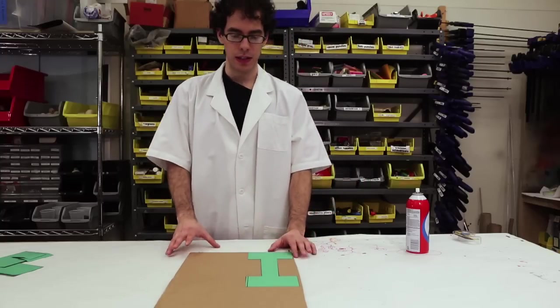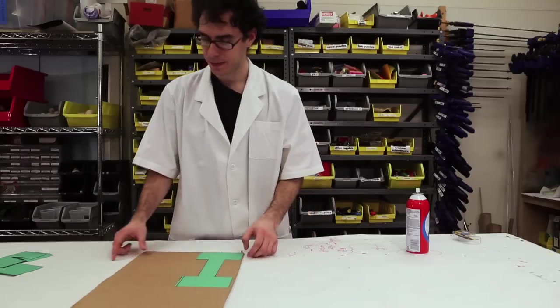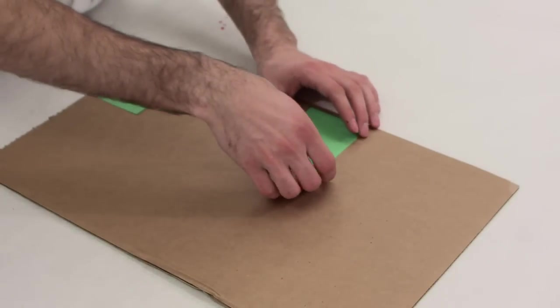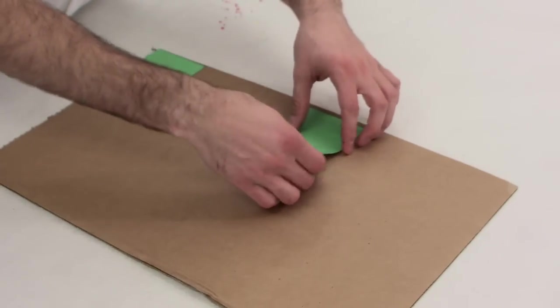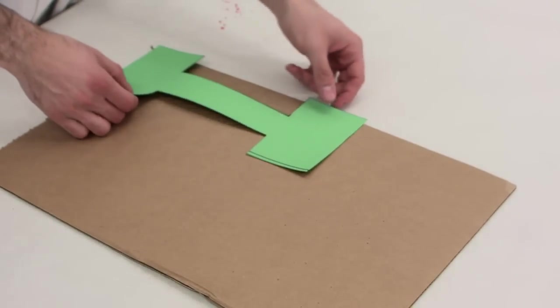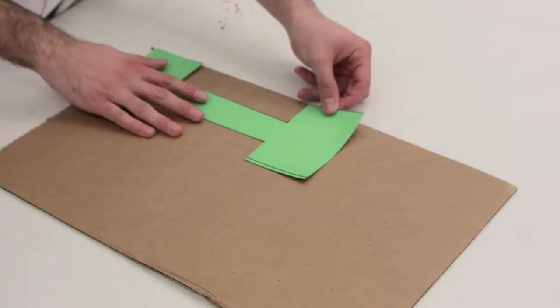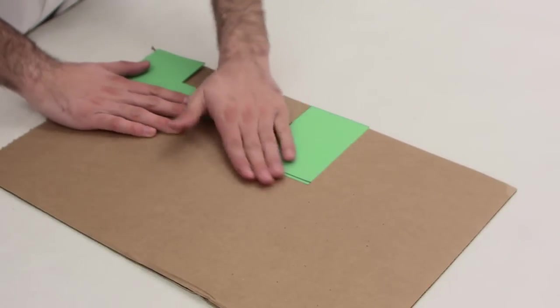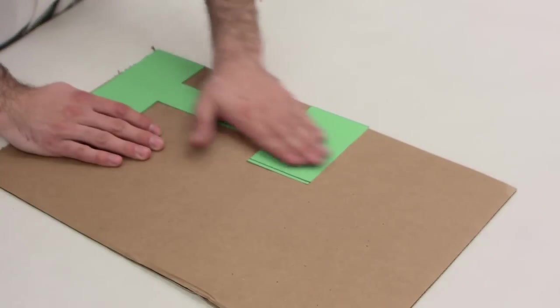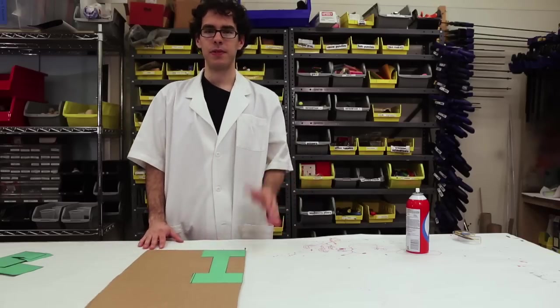And now since this is a repositional adhesive, if I find that I didn't get one of the edges quite perfect, what I can do is just peel the pattern up again. Nice and easy. Line it up, and then seal it one more time. There you go. Now your piece is ready for cutting.